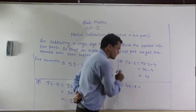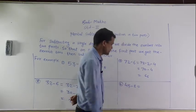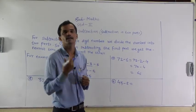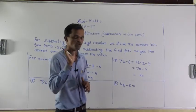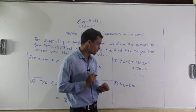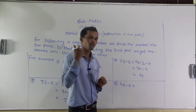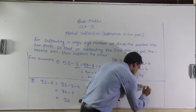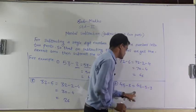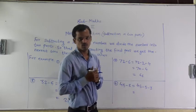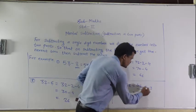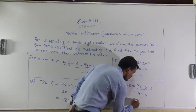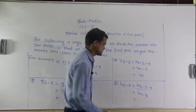Example: 45 minus 8. Just see the ones place digit, that is 5. If we subtract 5 from 45, we will get the whole ten, that is 40. So divide 8 into 2 parts: 5 plus 3. Write it as 45 minus 5 minus 3. Subtract the first part: 45 minus 5 equals 40, then subtract the next part, 3. 40 minus 3 equals 37.